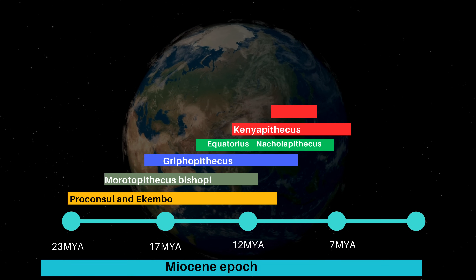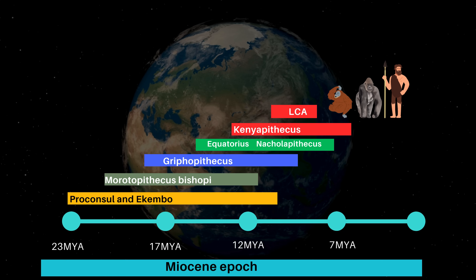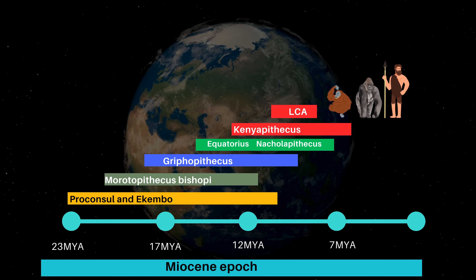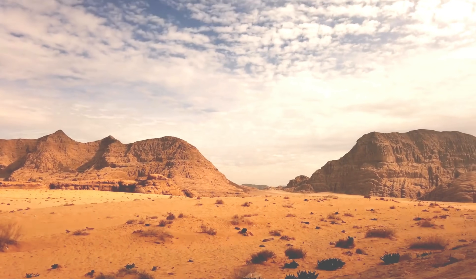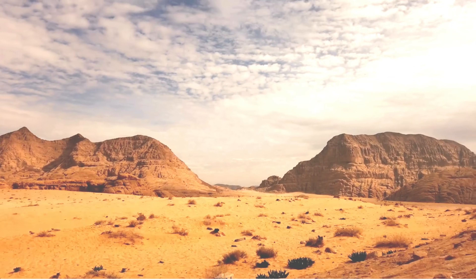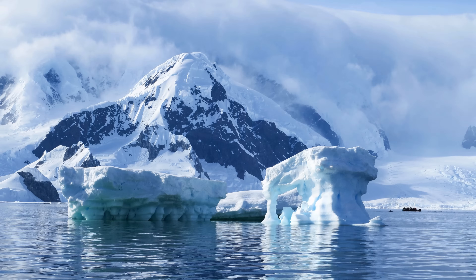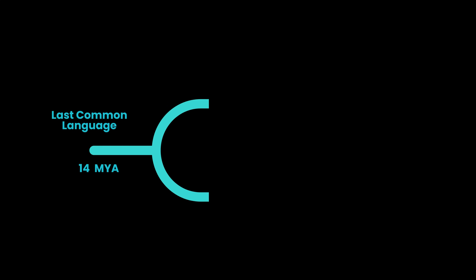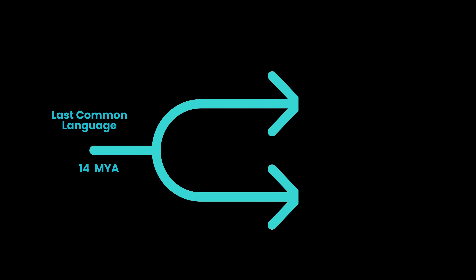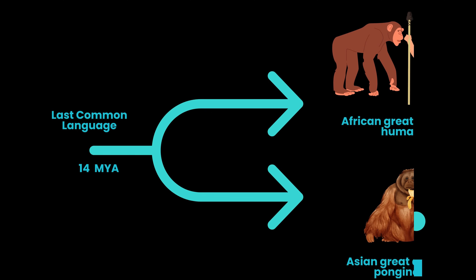The diversity of middle Miocene apes from Europe to East Africa suggests they were successful and may have been ancestors of living great apes. By around 12.5 million years ago, the earliest members of orangutans and African apes — including humans — appeared in Eurasia, likely evolving there. Major climatic shifts occurred between 17 and 14 million years ago and again between 8 and 5 million years ago due to changes in continents, mountains, and Antarctic ice.